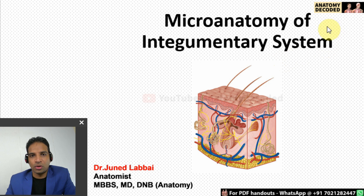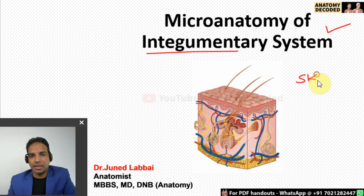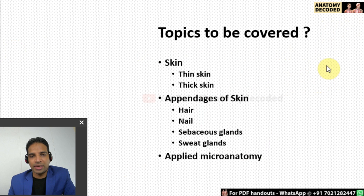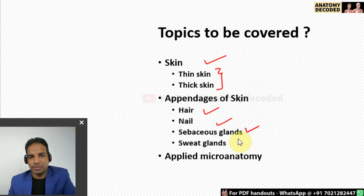Hello everyone. Welcome to this session on micro anatomy of the integumentary system. The integumentary system includes the skin and its appendages. Topics covered in this session include skin in detail — both thin skin and thick skin — followed by the appendages of the skin: hair, nail, sebaceous gland, sweat gland, and lastly the applied micro anatomy.